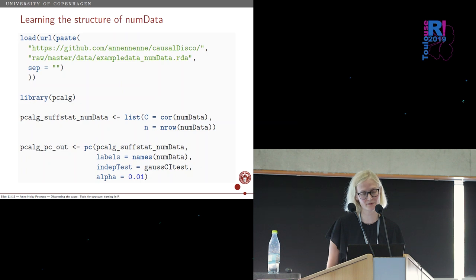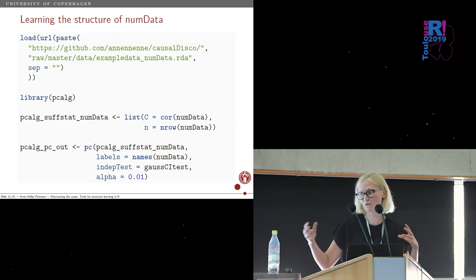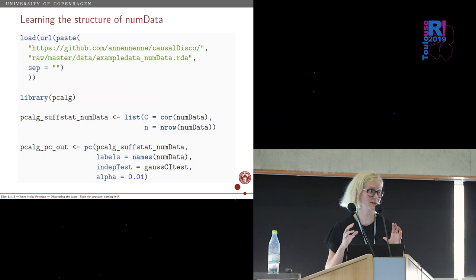It's called the constraint-based learning algorithm. It tries to take advantage of conditional independencies in the data. It starts off with a fully connected undirected graph and tries to remove edges first if you can detect conditional independencies in the data. The idea is to make use of those kind of relationships. And then when it has this sparser graph, there are some rules for directing edges that can be used. There are also other methods that go through different graphs and try to add and remove edges and give them some sort of score that reflects how good a model it is.